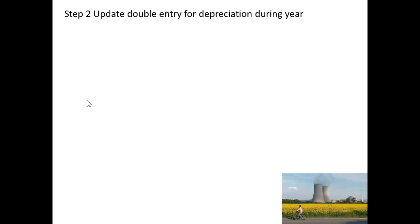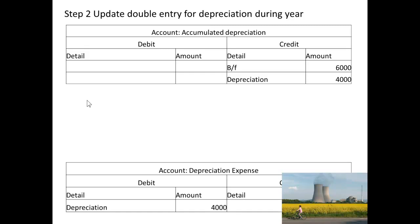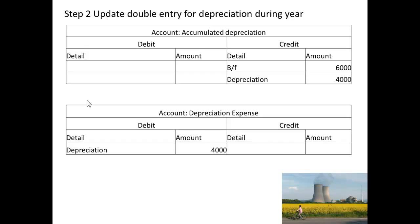We are now going to update the double entry for depreciation that has taken place during the year. We credit accumulated depreciation with $4,000 and debit a depreciation expense account with $4,000.